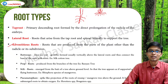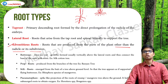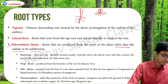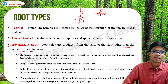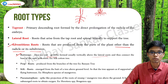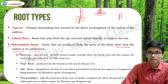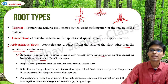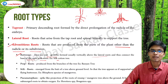Adventitious roots are roots produced from parts of the plant other than the radicle or its subdivisions. If roots are produced from any other part of the plant, such roots are known as adventitious roots and are of several types. Buttress roots are outgrowths formed usually vertically above the lateral roots, connecting the base of the stem with the roots - you can see some more roots right at the base of the stem. Examples include the silk cotton tree.